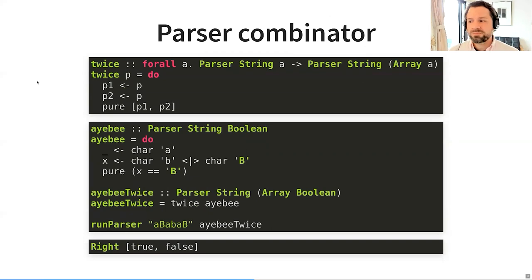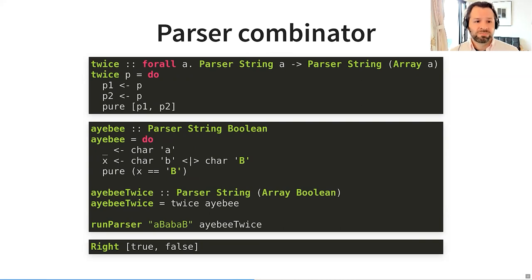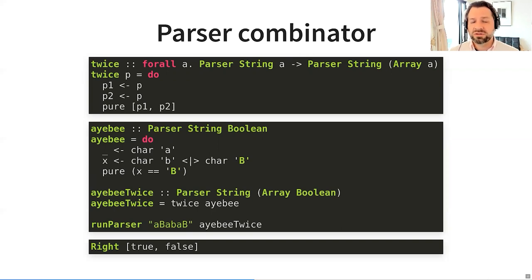Let's try writing our own parser combinator. Here is one named 'twice'. It is a lot like the many combinator and has the same type signature. The difference is that many tries to match its argument parser as many times as possible, but twice matches exactly two times — no more, no less. The twice combinator takes one parser as an argument named p, which can be any type of parser (for all a). It first matches p and binds the result to p1, then matches p again and binds to p2. If both succeed, it returns an array with p1 and p2. The ab_twice parser matches the ab pattern exactly two times and returns true for matched patterns with an uppercase 'B'.